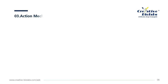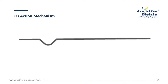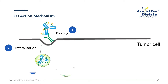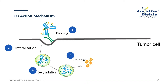ADC covalently conjugates cytotoxic drugs to monoclonal antibodies through a chemical linker, and uses monoclonal antibodies as carriers to specifically transport cytotoxic drugs to the surface of tumor cells expressing cancer-specific antigens. Antibodies recognize and bind to specific antigen sites, determining the specificity of targeted delivery. When the antibody binds to the receptor on the cell membrane, endocytosis occurs. The linker cleaves in the intracellular lysosome and releases small molecular cytotoxic drugs, which then kill tumor cells. Some ADC drug designs do not internalize but release outside the cell, playing a role in the local microenvironment.